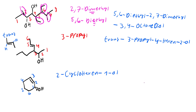Cyclo comes from the shape. We have 1, 2, 3, 4, 5, 6 - that's 6 carbons, a hexane - but it's in a shape so it's cyclohexen, meaning double bond. Our alcohol occurs at 1. So we put hexen-dash-1-ol. Not EN, just N. So: 2-cyclohexen-1-ol.